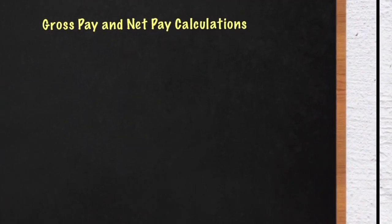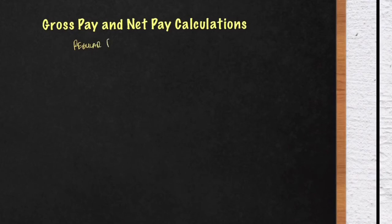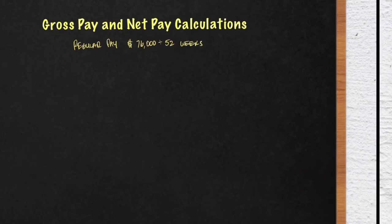Let's get down to calculating his gross pay. The first thing we have to do is calculate regular pay. Regular pay for Braylon is his yearly salary of $76,000 divided by 52 weeks. Once you do that, you will get a weekly payment of $1,461.54.